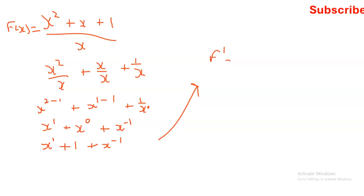Now we apply the derivative laws. We've got x to the power of 1, so it will be 1 times x to the power of 1 minus 1. Then we have a constant — remember, the derivative of a constant is zero. And then for the last term, we'll have negative 1 times x to the power of negative 1 minus 1.